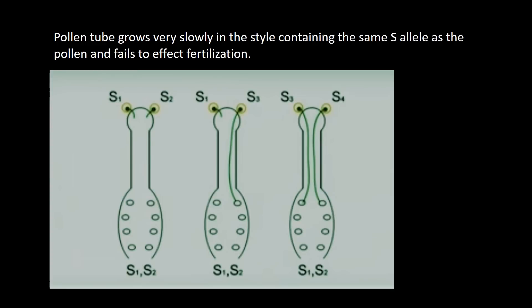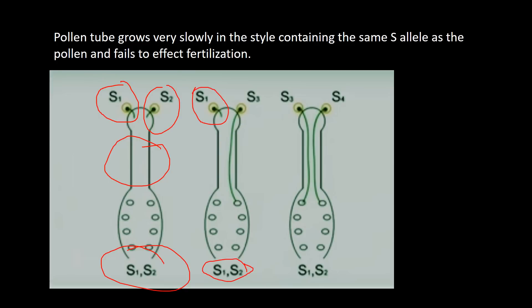In the gametophytic system, if the female alleles are S1S2 and the pollen alleles are also S1S2, fertilization cannot take place — it is fully incompatible. If the stigma is S1S2 and the pollen is S1, it is partially incompatible — one half is not compatible. If the stigma is S1S2 and the pollen carries S3 and S4 — all four alleles different — complete fertilization takes place.